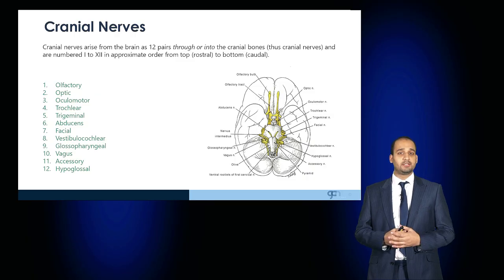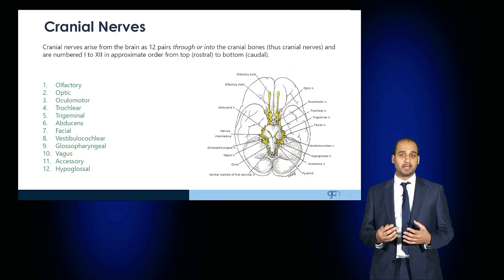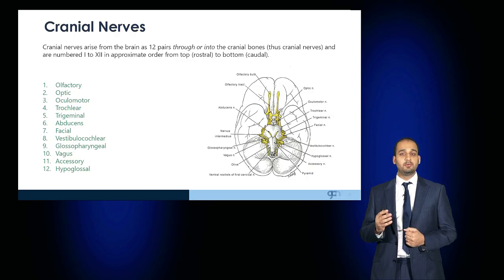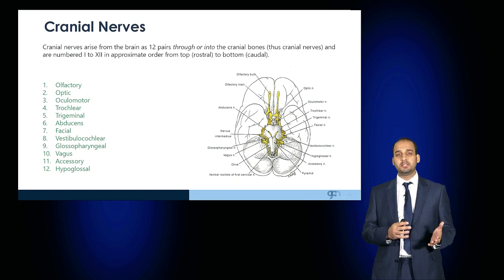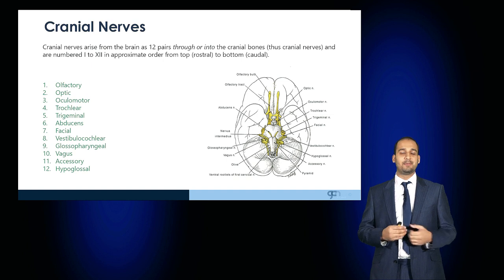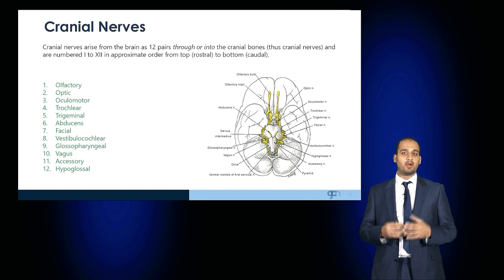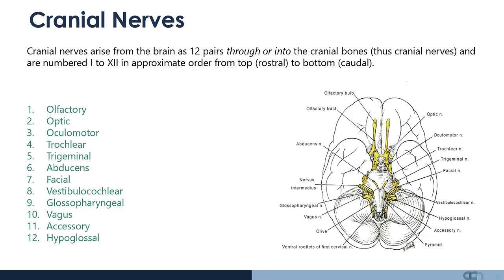The cranial nerves arise from the brain as 12 pairs through or into the cranial bones, and thus termed cranial nerves. They are numbered 1 to 12 in approximate order from the rostral to caudal position.